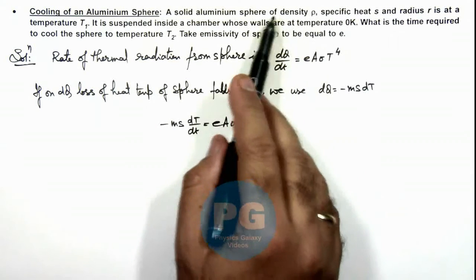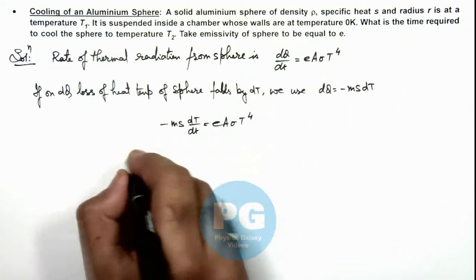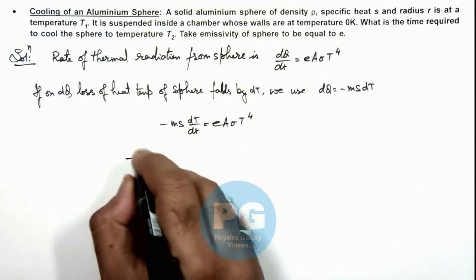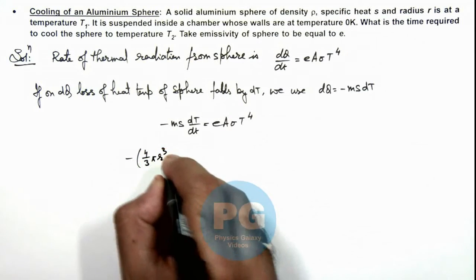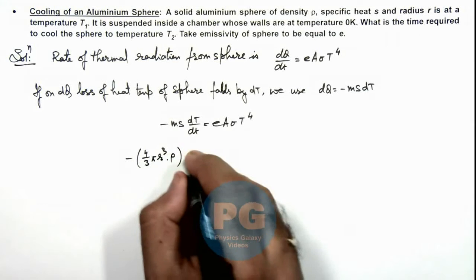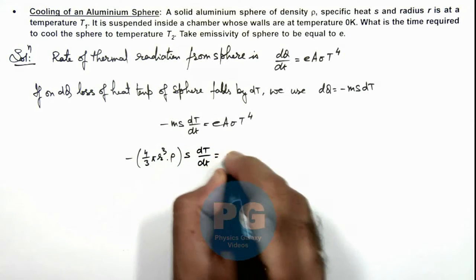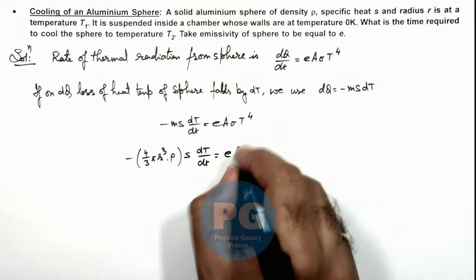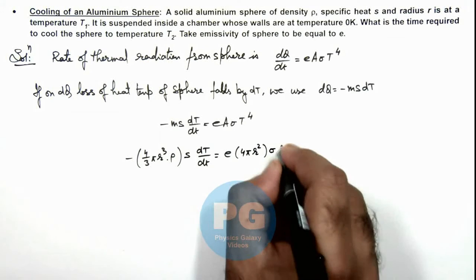We are given that the sphere is of density ρ and radius r. If we substitute the values, this is minus mass which we can write as (4/3)πr³ρ, multiplied by s dT/dt, is equal to e, surface area can be taken as 4πr² multiplied by σT to power 4.